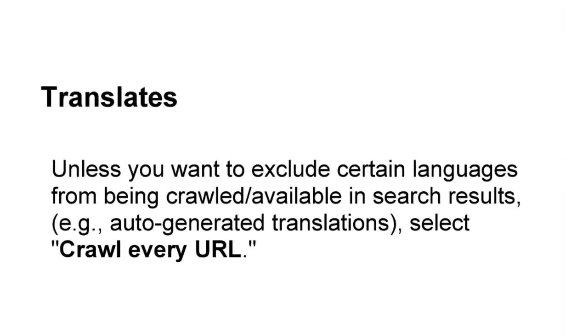After specifies is translates. Unless you want to exclude certain languages from being crawled and available in search results, like auto-generated translations, it's likely you'll select 'crawl every URL.' As an aside, one best practice is to put your translated original content not in a URL parameter but in a subfolder or subdirectory. The reason is that in a subdirectory, it helps Google better understand your site structure and that this applies to translated or regional content.